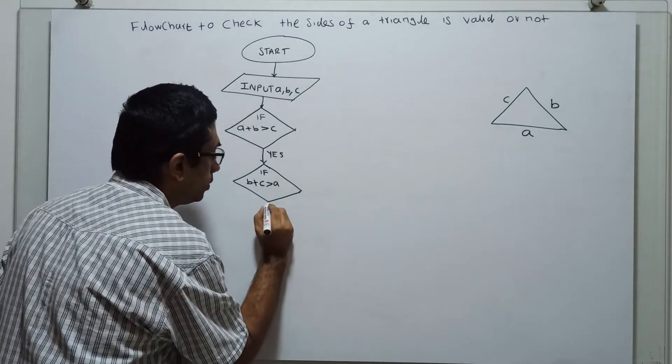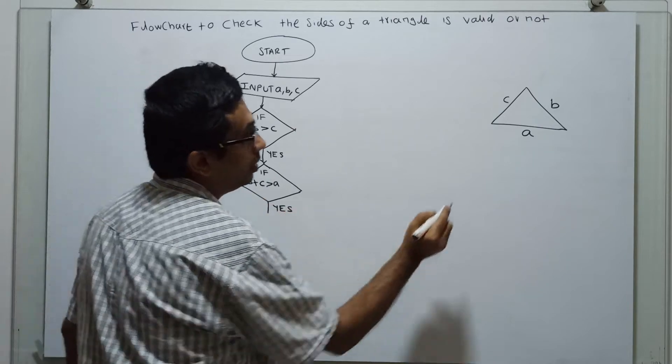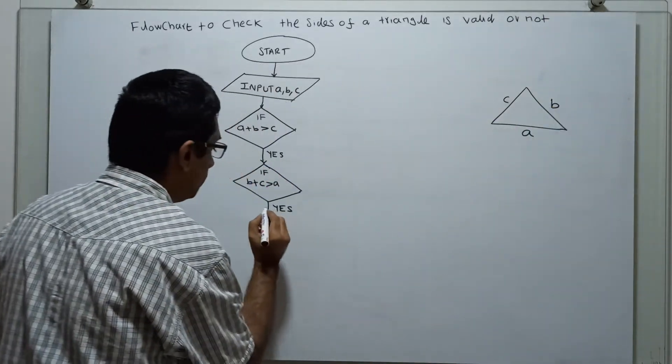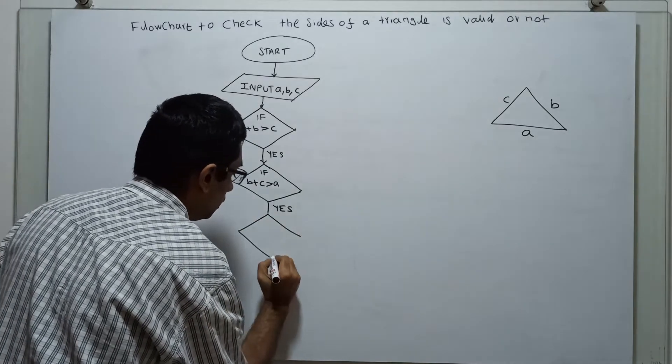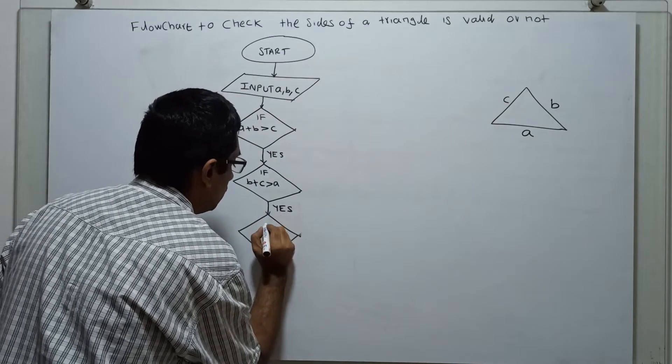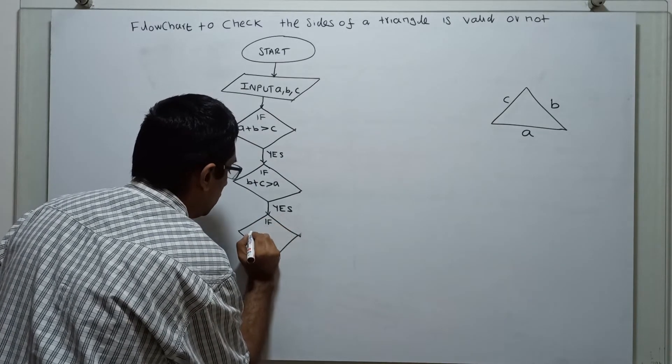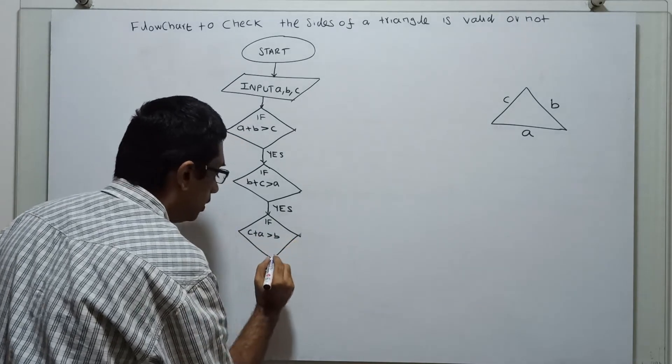If it is also true, yes means I am checking C plus A greater than B. If C plus A greater than B, this is also true.